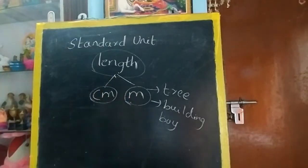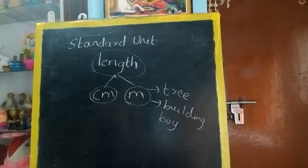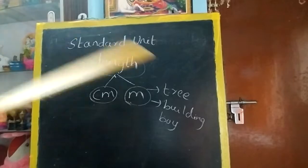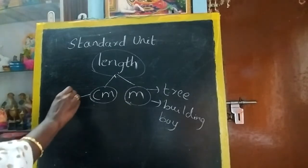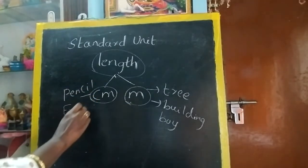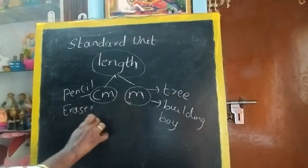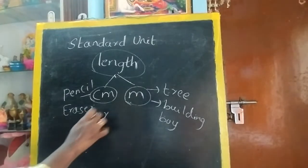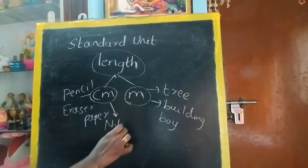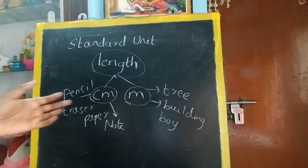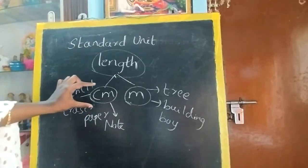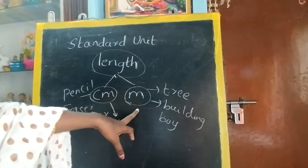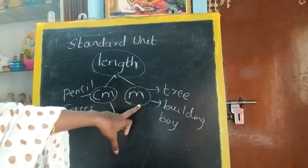Even height or length can be measured in meter. Which things can be measured in cm? Using your scale, which things can be measured? All small things we can measure — that is pencil, eraser, paper, notebook, even a book. These and all can be measured in cm. So small things can be measured in cm, and longer things can be measured in meter.